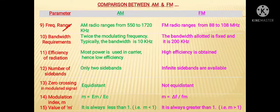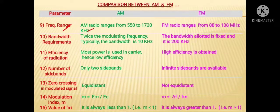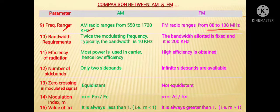The next point is regarding frequency range. In AM radio, it ranges from 550 to 1720 kHz, whereas FM radio ranges from 88 to 108 MHz.